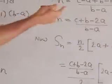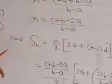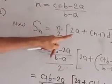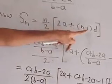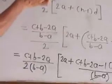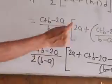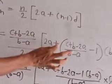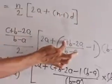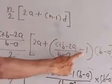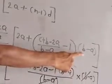This is the value of N. Because in the formula for SN we have to put that value of N. Now use the formula: SN equals N upon 2 into bracket 2A plus N minus 1 into D. Substituting all values: N is C plus B minus 2A upon B minus A, all over 2, into bracket 2A plus N minus 1 into D, where D is B minus A.